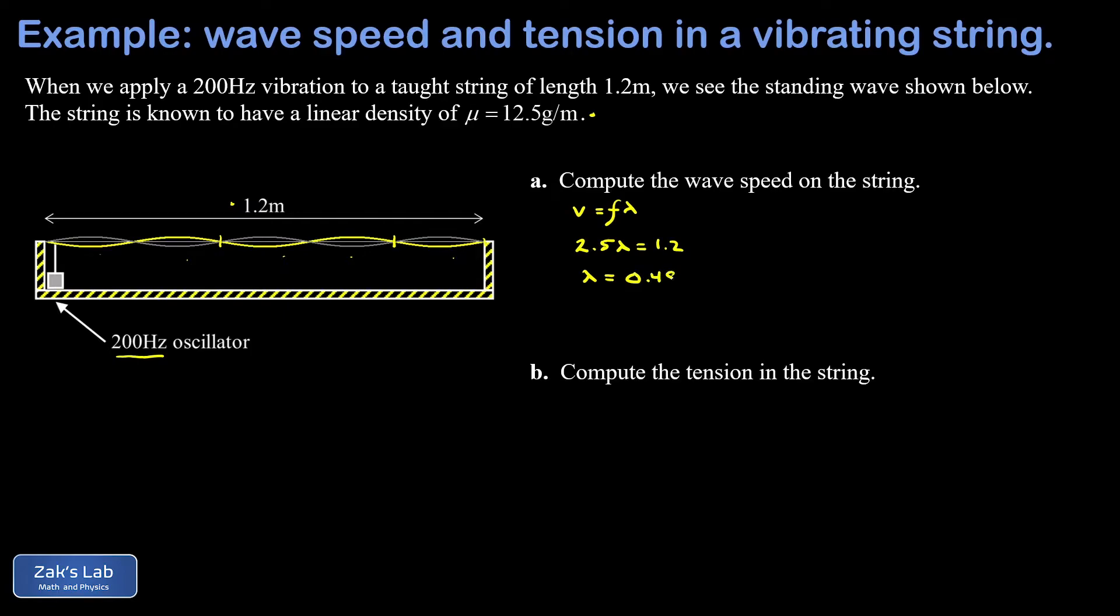Then we just sub into the wave speed formula: v is equal to f lambda. That's 200 hertz for the frequency of oscillation, 0.48 meters for the wavelength, and remember our hertz is one over seconds, and so I end up with units of meters per second here. So this is good and I arrive at my wave speed of 96 meters per second.